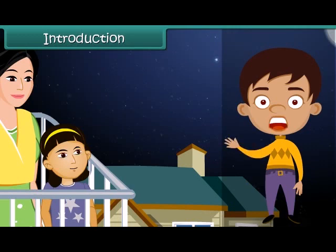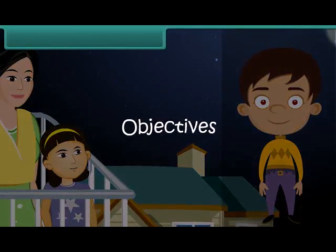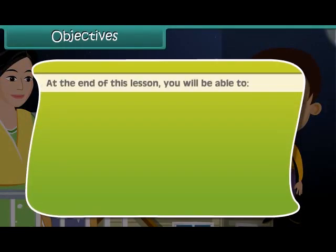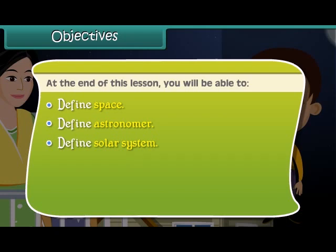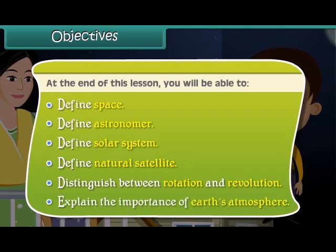In this lesson you'll learn about the objects in space. Objectives: at the end of this lesson you'll be able to define space, define astronomer, define solar system, define natural satellite, distinguish between rotation and revolution, and explain the importance of Earth's atmosphere.